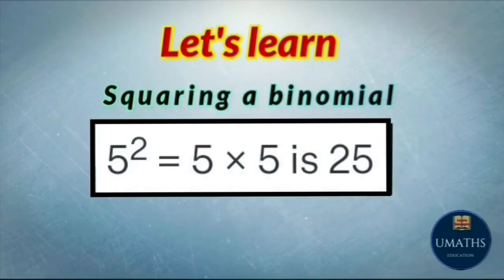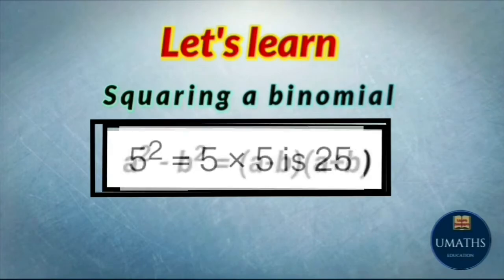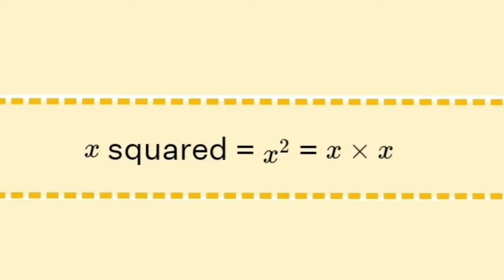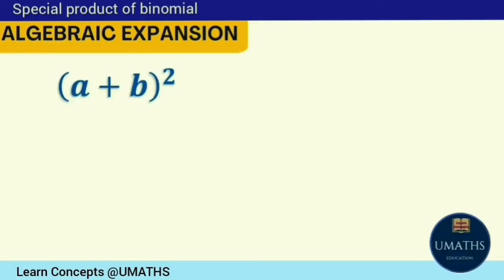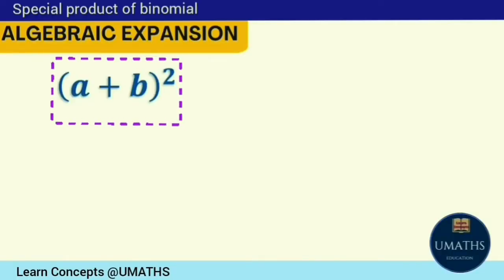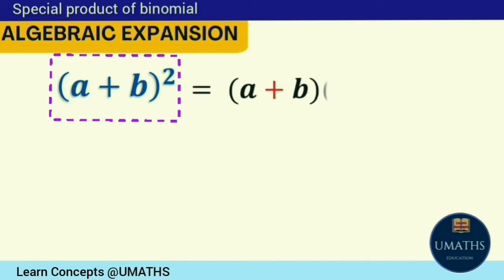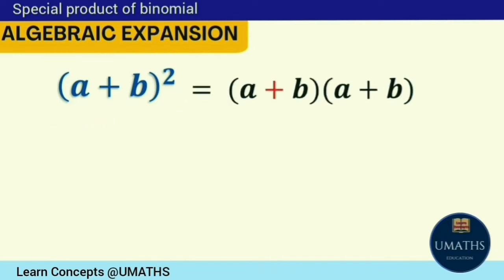We know that the square of any number can be written as its product with itself. For example, x squared can be written as x times x. Similarly, the square of a plus b can be written as a plus b multiplied by a plus b.